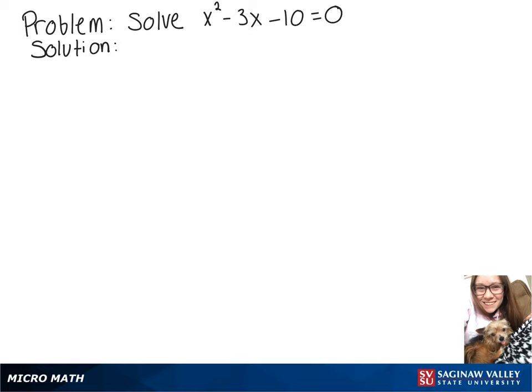In this video, we're going to solve x² - 3x - 10 = 0 by factoring. To factor it, we want to think of two numbers that multiply to give us -10 and add to give us -3.